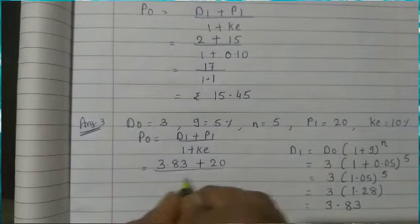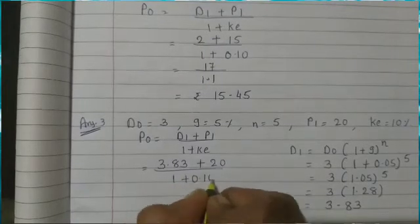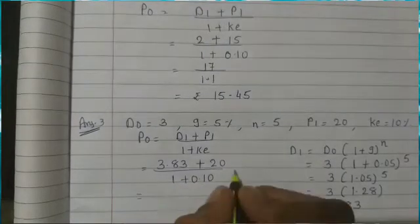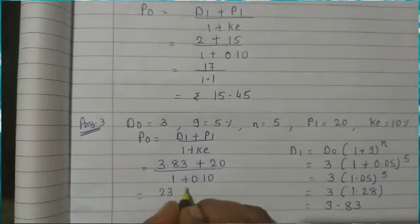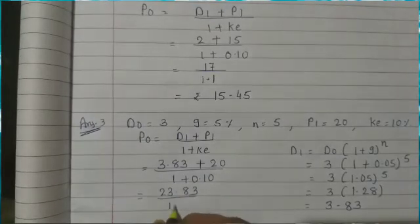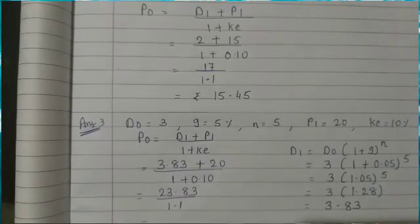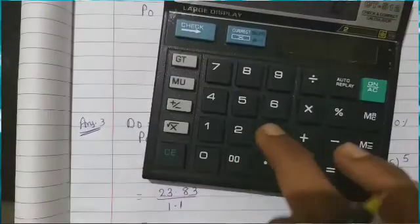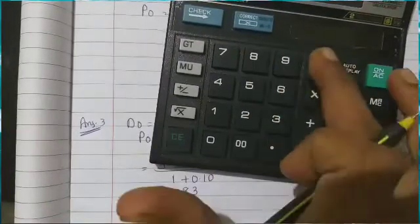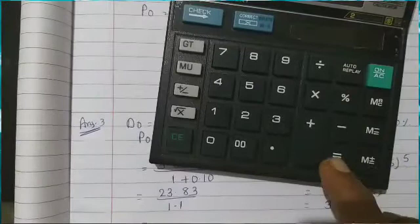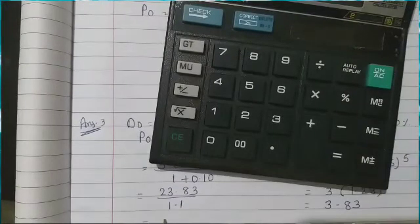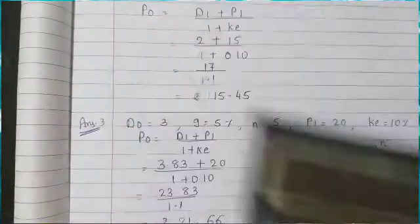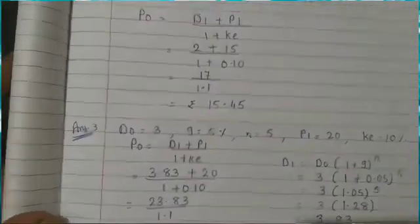Now using the formula: P0 = (D1 + P1) / (1 + K) = (3.83 + 20) / (1 + 0.10) = 23.83 / 1.1. The price of the share is Rs. 21.66.